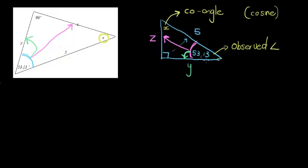Now, if we know the observed angle, let's call it theta, then the co-angle is 90 degrees minus theta. Why? Well, because if I take my 90 degree angle plus my observed angle plus my co-angle, I must get 180 degrees. So if I subtract this on both sides,